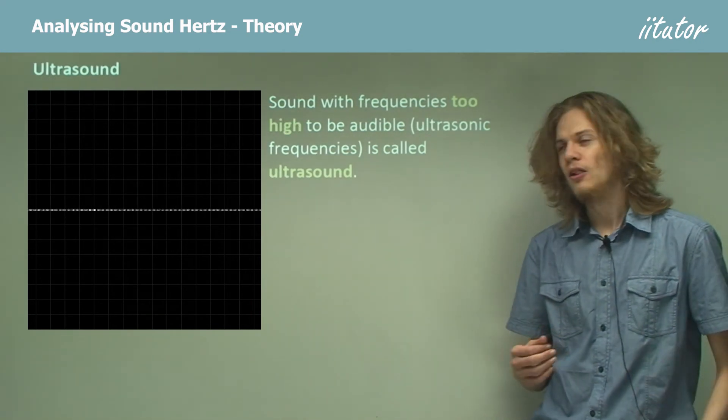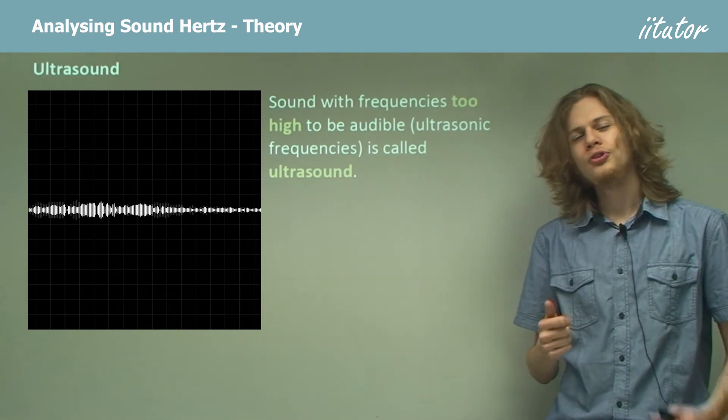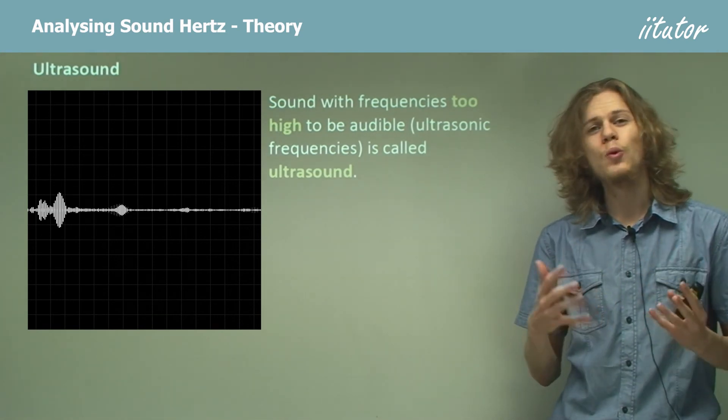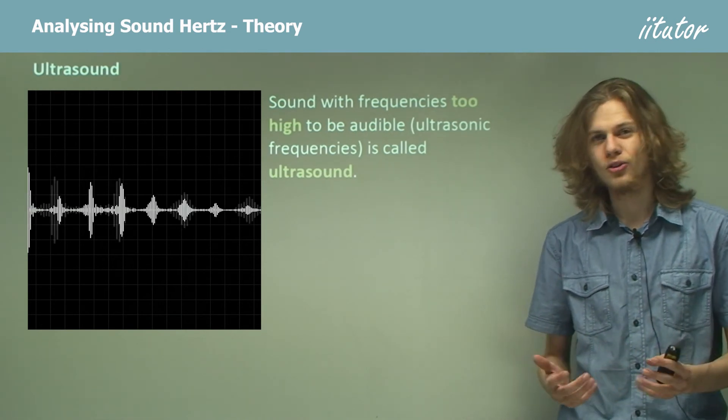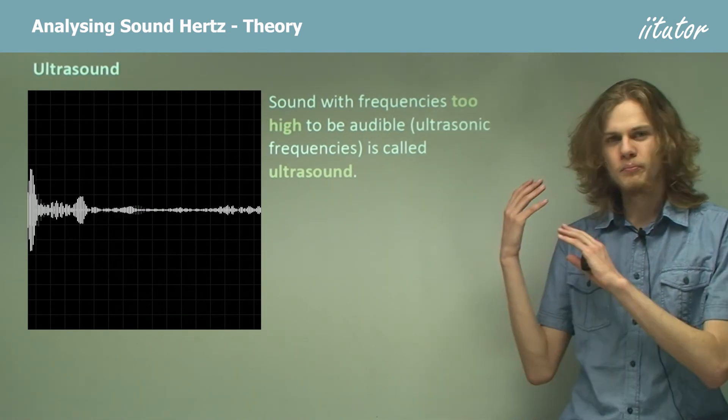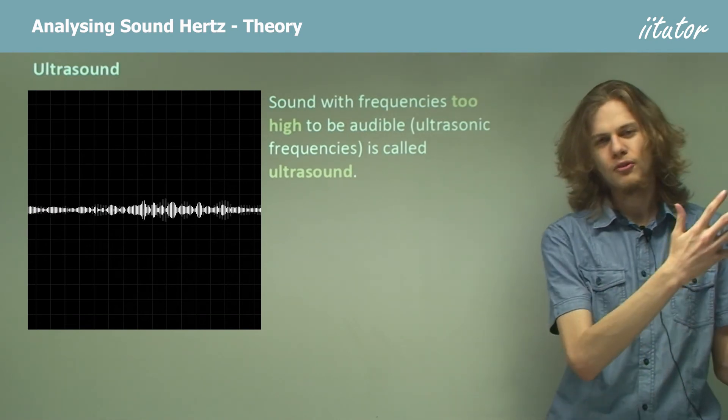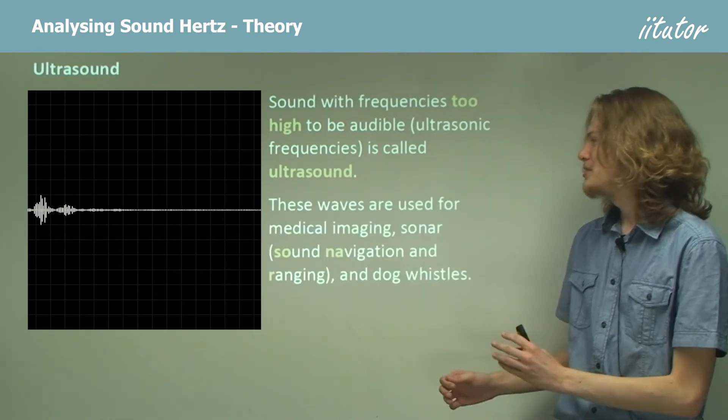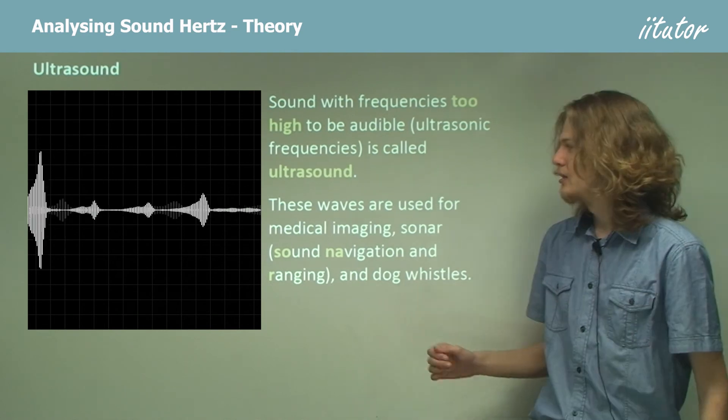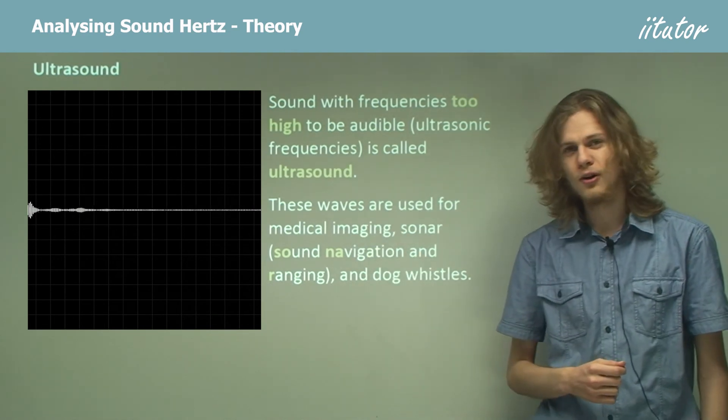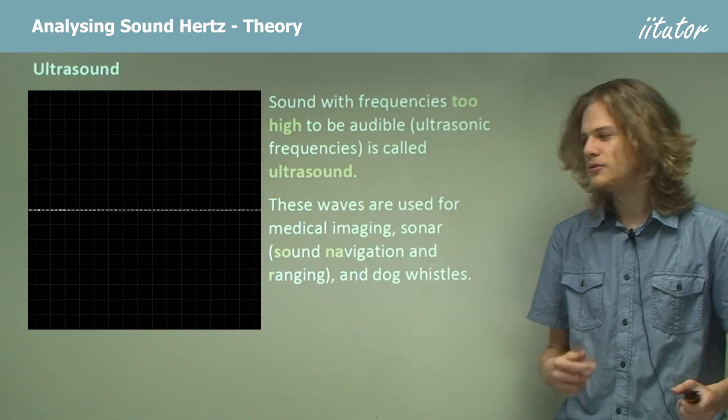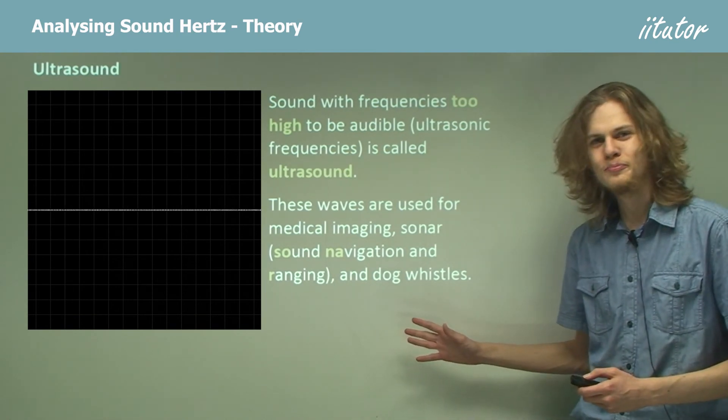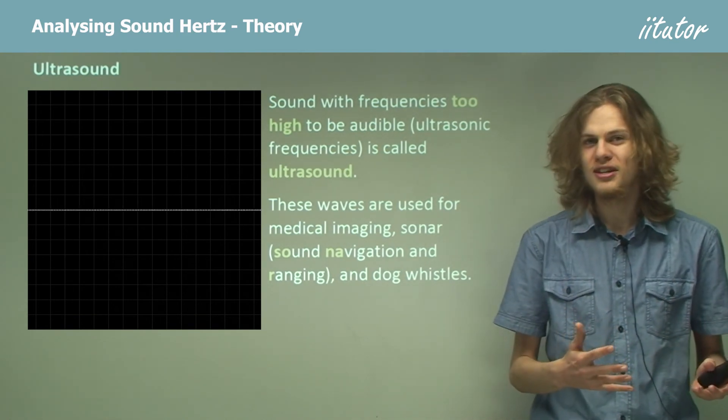On the other end of the scale, we have ultrasound. Now ultrasound is sound with frequencies too high to be heard, so that's above a frequency of about 20 kilohertz. We can use ultrasound to pass through objects and bounce off other objects. This means we can use them for medical imaging, in sonar which is a way of navigating using sound waves, and in dog whistles because dogs are able to hear these frequencies and we are not.